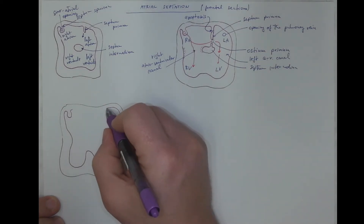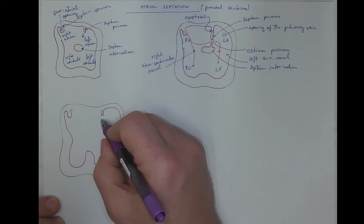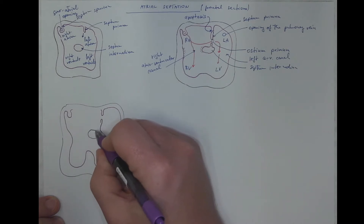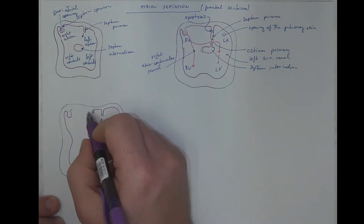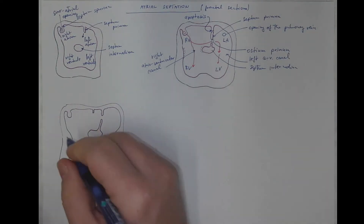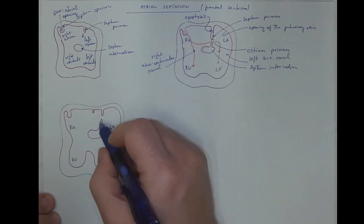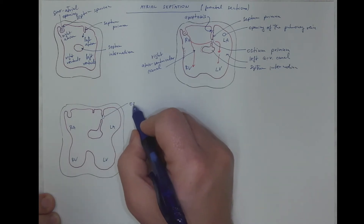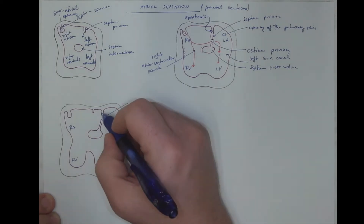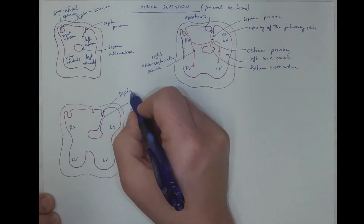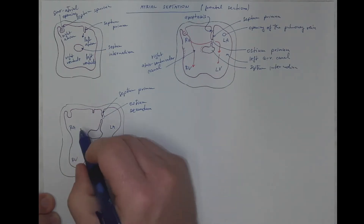Now the situation is different. There is a new opening in the septum primum which is more cranially. This apoptosis created a new opening called the ostium secundum — literally 'the second opening' — which is still an opening in the septum primum. The ostium primum has disappeared. And we have a new septum proliferating here to the right of the septum primum.